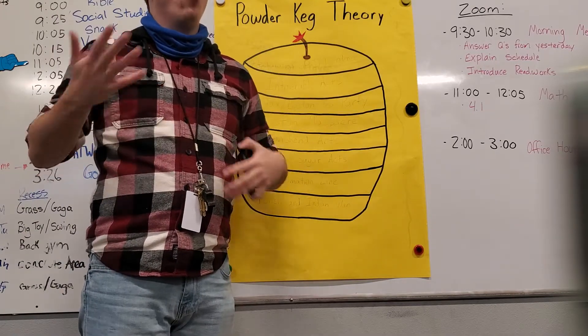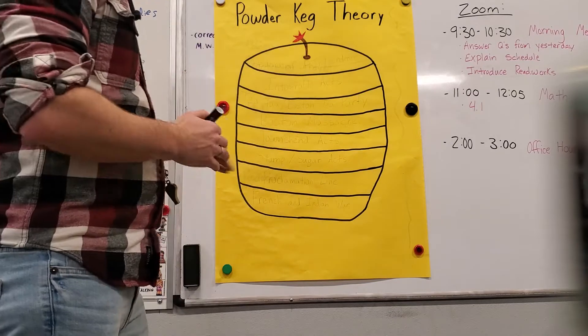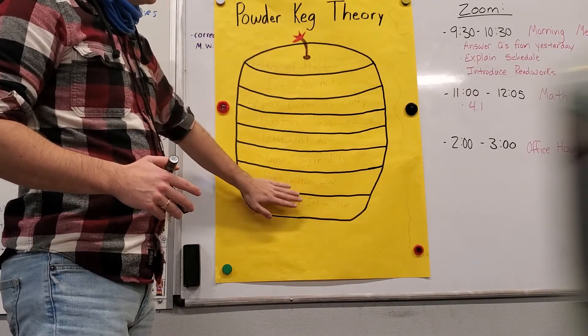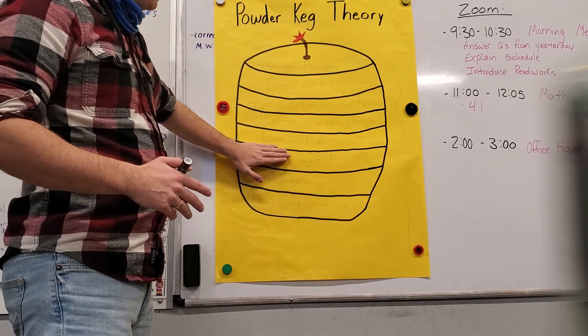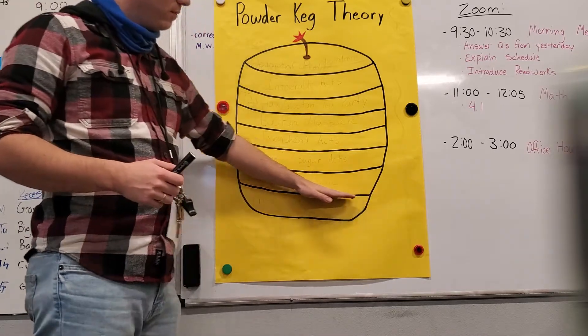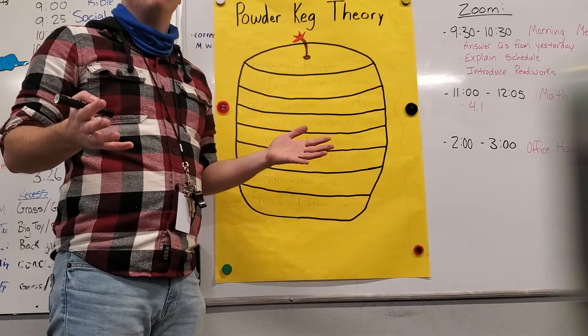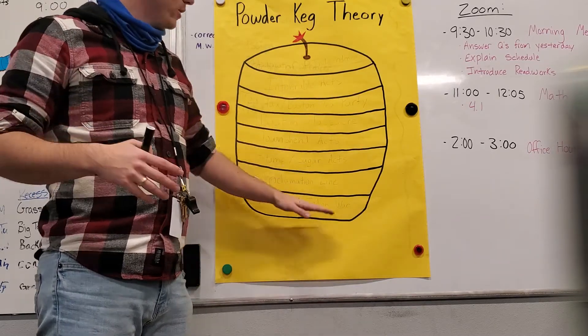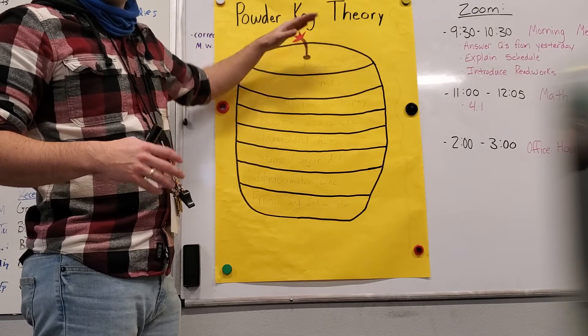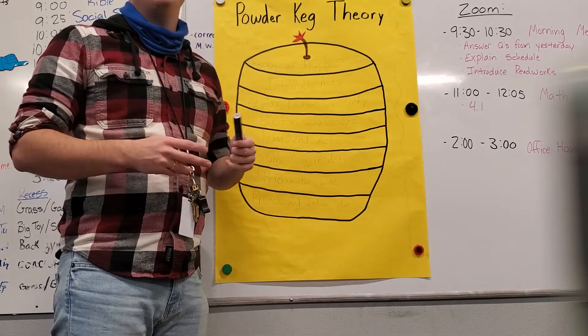So the powder keg theory is a theory about why the Revolutionary War started. And so what we do is we'll have different parts that will lead up to this powder keg getting more and more and more full. So for example, if I had a powder keg that was just this full of gunpowder, sure it would give an explosion, but it wouldn't be too significant. Versus if I had a gunpowder barrel that was pulled up all the way to the top, there might be a really large explosion, or it would just be a bigger explosion.